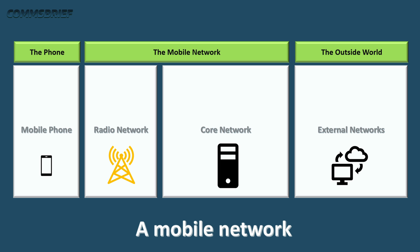The best way to understand any network architecture is to follow the logic and the workflow of the services. When you use your mobile phone to make a call, it is connected to the base station, which is part of the radio network. The radio network provides the muscle power, but the real brain power comes from the core network, which connects you to whoever you want to connect with. The core network is linked to the outside networks like the telephone networks and the internet.